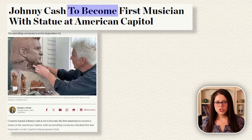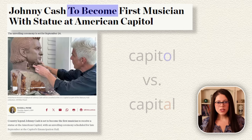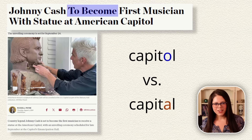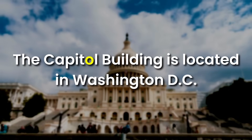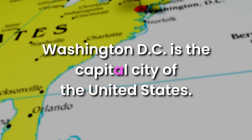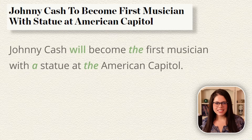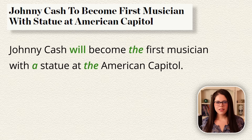Johnny Cash to become first musician with statue at American Capitol. Each state in the U.S. has two historical statues in the Capitol building. Notice that 'Capitol' and 'capital' are two different words with the same pronunciation. The Capitol building is located in Washington, D.C., which is the capital city of the United States. The complete sentence would be: 'Johnny Cash will become the first musician with a statue at the American Capitol.'